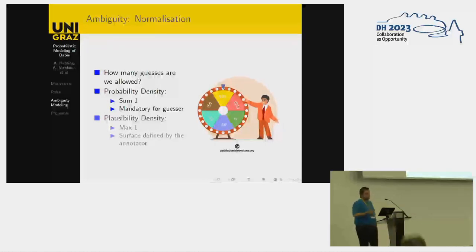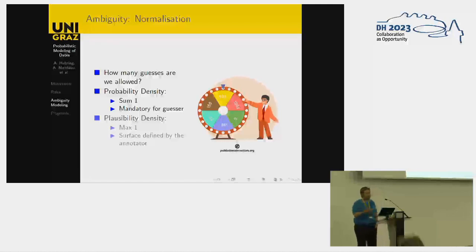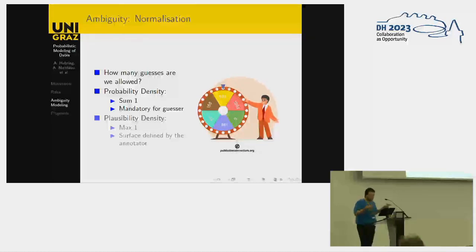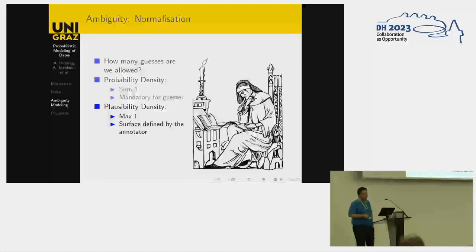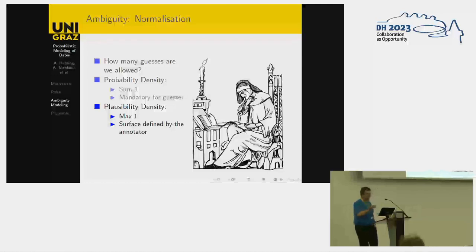There comes a different question, which is normalization. Normalization, practically in this sense, would mean: how many guesses are we allowed to have? What's standard in statistics is having a probability density, which would mean a sum of one — and that's what all guessers must have. We could also have what we call a plausibility density, which has a maximum of one, and that has to do with the fact that it must be winnable.